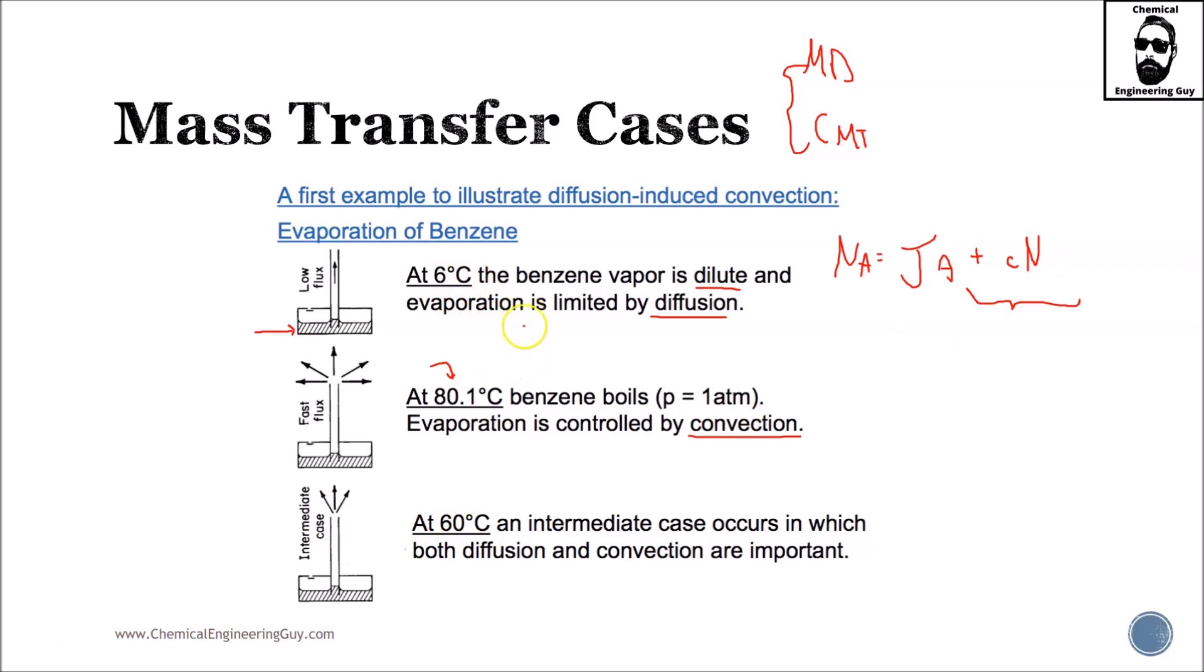And then of course we've got to have something in between, in which we can say that both species are important. This will be the intermediate case: at lower temperatures, not so low that it will be dilute and limited by diffusion, but not at the level in which you are literally having bubbles of evaporation. This is the intermediate case in which both diffusion and convection are important.